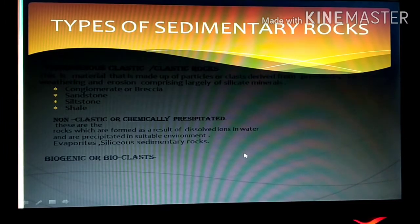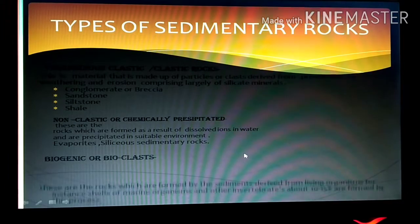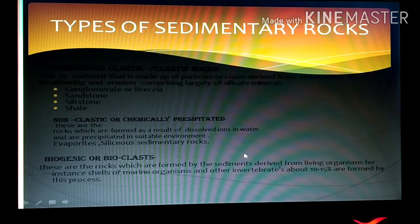The next category is biogenetic or bioclastic rocks. These are the rocks which are formed by the sediment derived from the living organisms. For instance, shells of marine organisms and other invertebrates. About 10 to 15% of the sedimentary rocks are formed by this process.